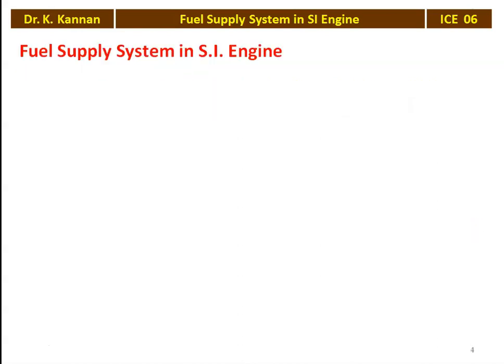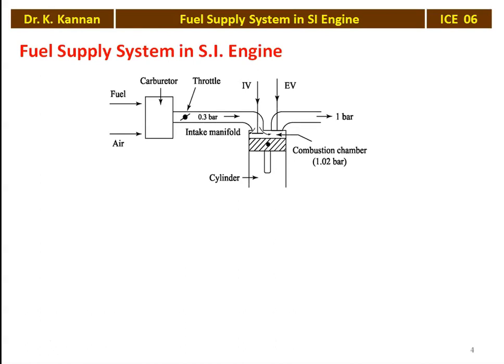The fuel supply system in SI engine — look at the diagram for a few seconds and note down a rough diagram if you wish. Identify the parts: we have the carburetor where the air and the fuel are entering, a throttle valve, the engine cylinder, intake manifold, combustion chamber, cylinder, inlet valve, and exhaust valve. The intake manifold is connected with the carburetor, where atmospheric air and fuel from the fuel tank are supplied. The carburetor prepares the mixture of air and fuel, and the quantity of the air fuel mixture supplied is regulated by the throttle valve.